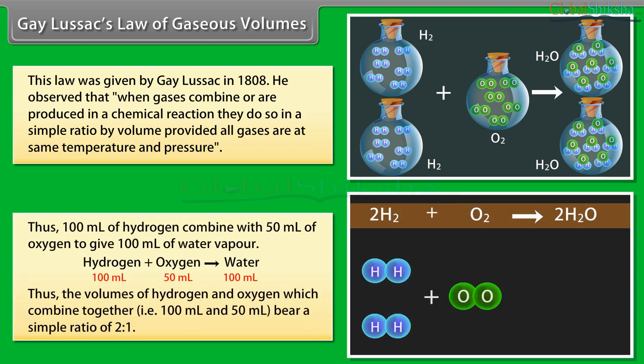Thus, 100 ml of hydrogen combined with 50 ml of oxygen to give 100 ml of water vapor. Hydrogen plus oxygen gives water: 100 ml plus 50 ml gives 100 ml. The volumes of hydrogen and oxygen which combine, i.e., 100 ml and 50 ml, bear a simple ratio of 2:1.